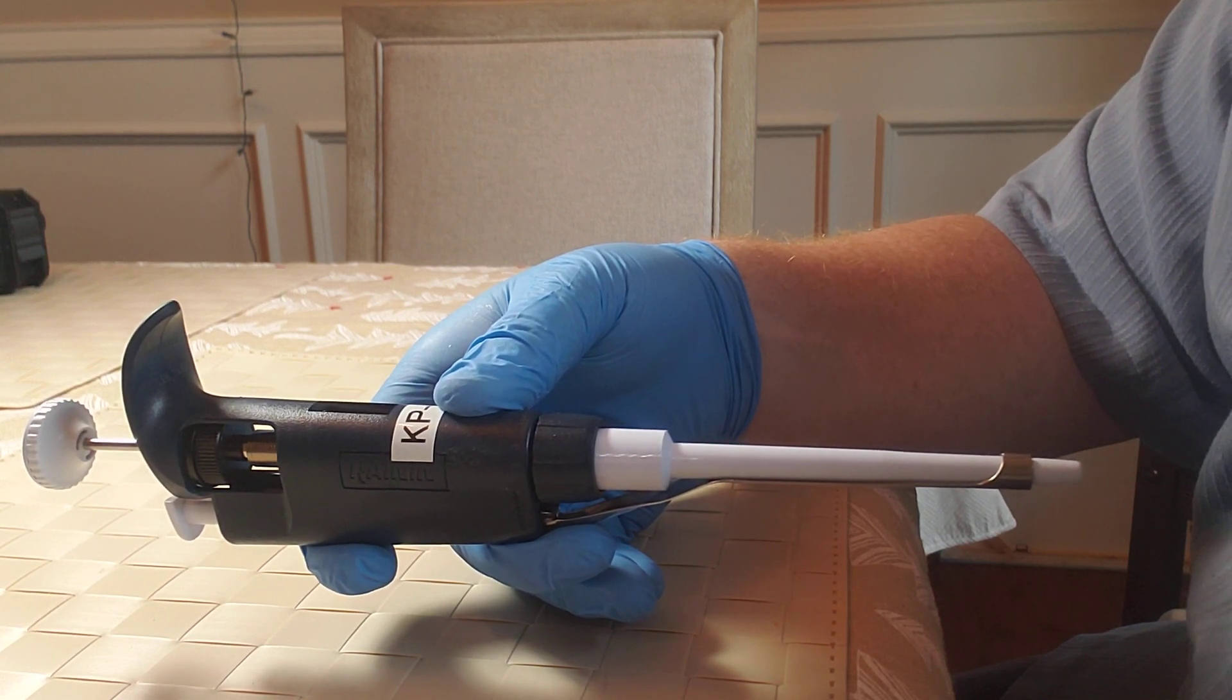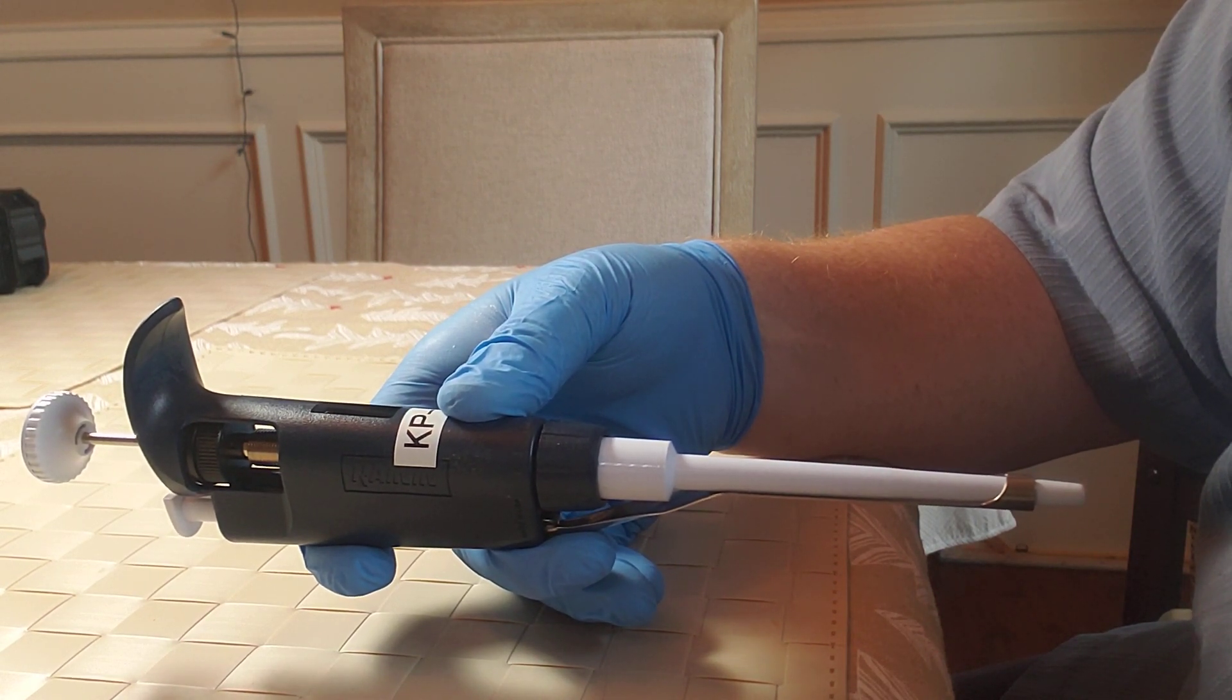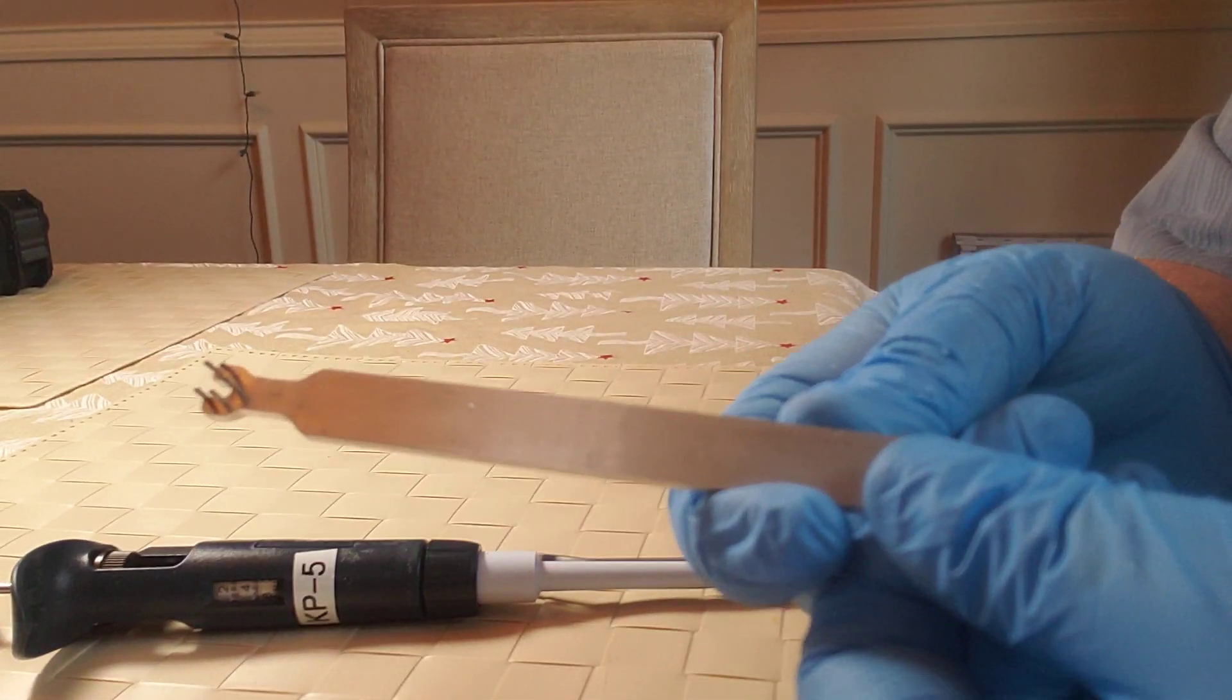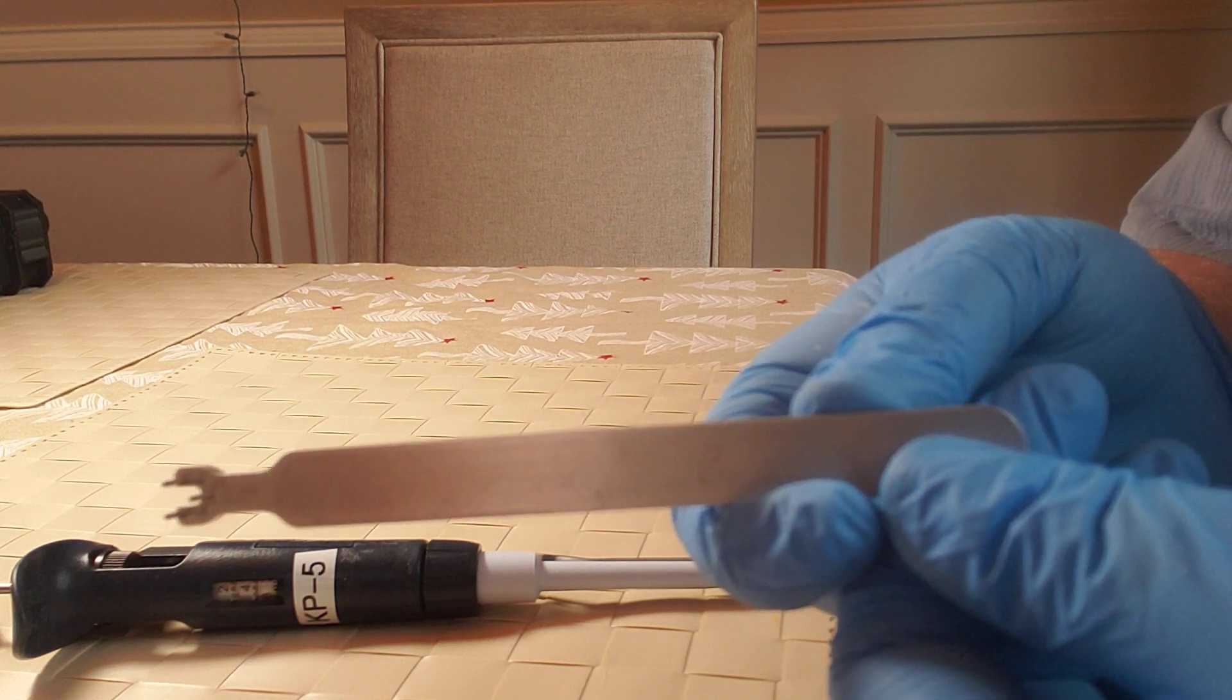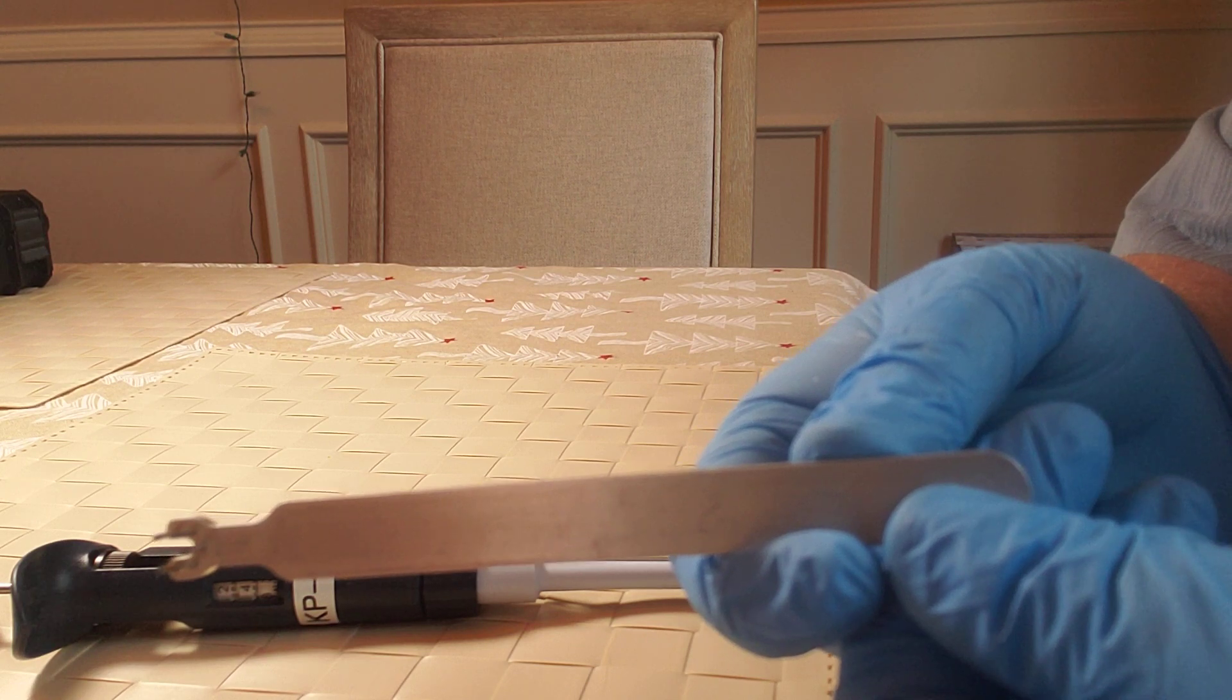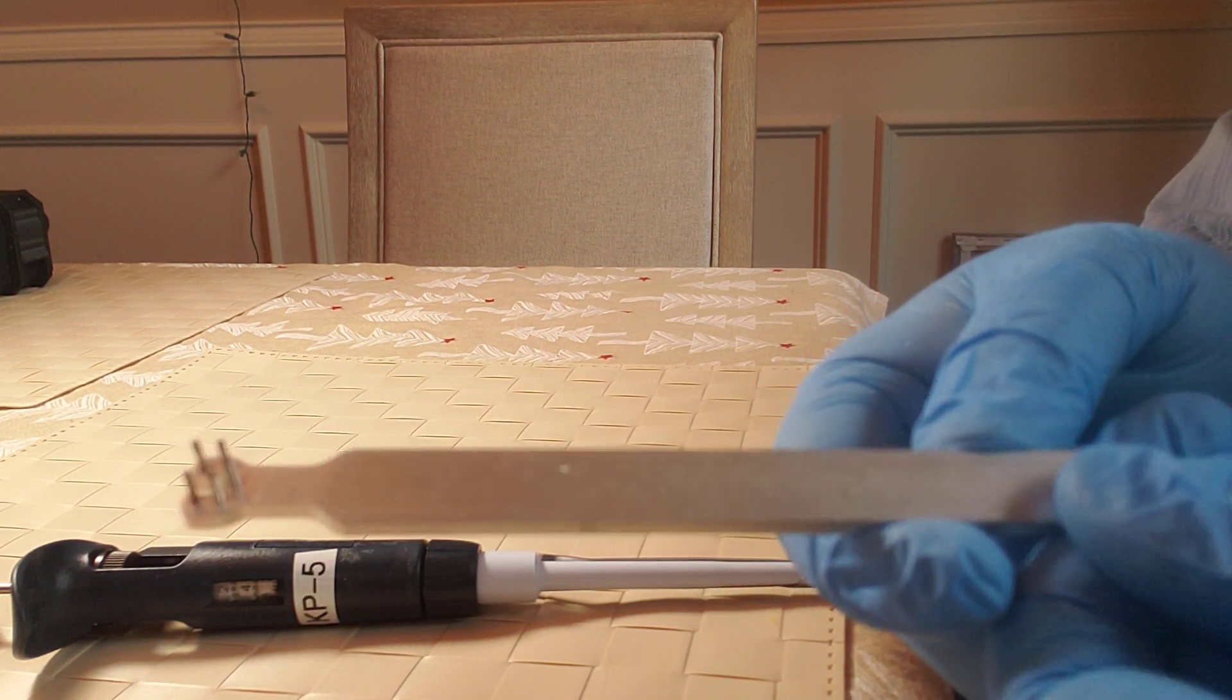Section 2: How to perform the calibration adjustment process. As you can see on this screen here, we have the Rainin Classic, the Gilson Pipette Man Classic, the Pipette Man G, and the Pipette Man Neo, and of course, the Rainin Classic calibration tool.